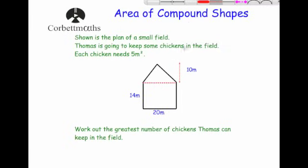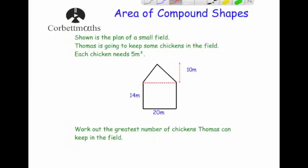We'll split the field at the boundary between the rectangle and triangle. Thomas is going to keep chickens in the field, and each chicken needs 5 meters squared. We need to find the area of the rectangle, add the area of the triangle, and then divide the total by 5 to find the maximum number of chickens.